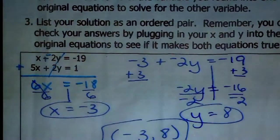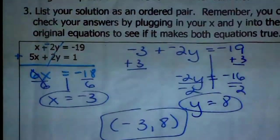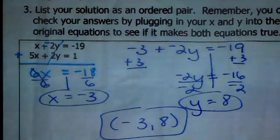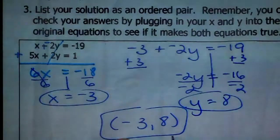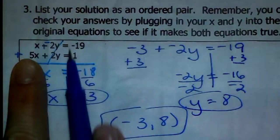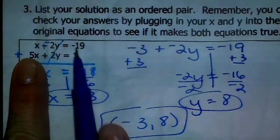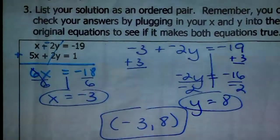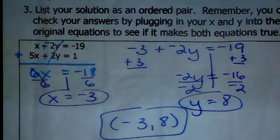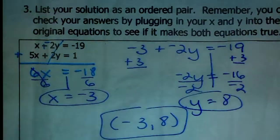The solution point is negative 3, 8. We spend a lot of time checking solutions in class. You should take negative 3 and 8 and plug them in for X and Y in both equations to make sure it works for both. When you're taking a test, quiz, or checking homework problems, please plug that in.